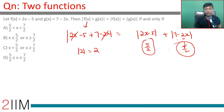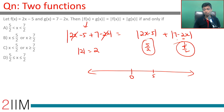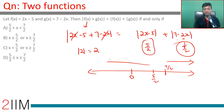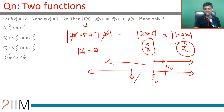So we have 0, then 5/2, then 7/2 on the number line. This gives us three cases: x > 7/2, x < 5/2, and x between 5/2 and 7/2.